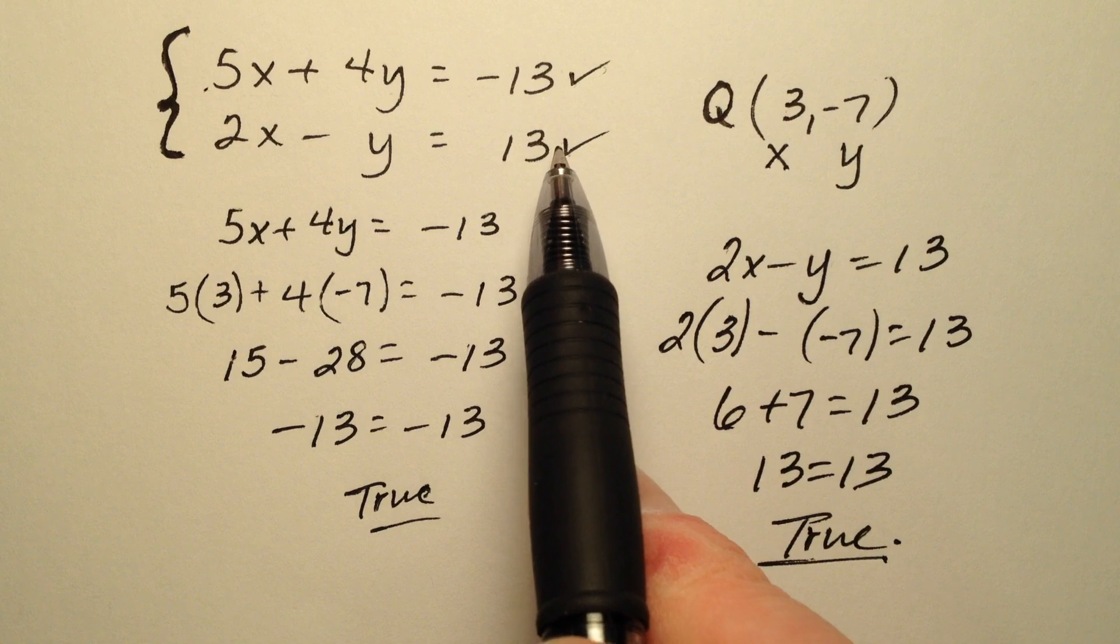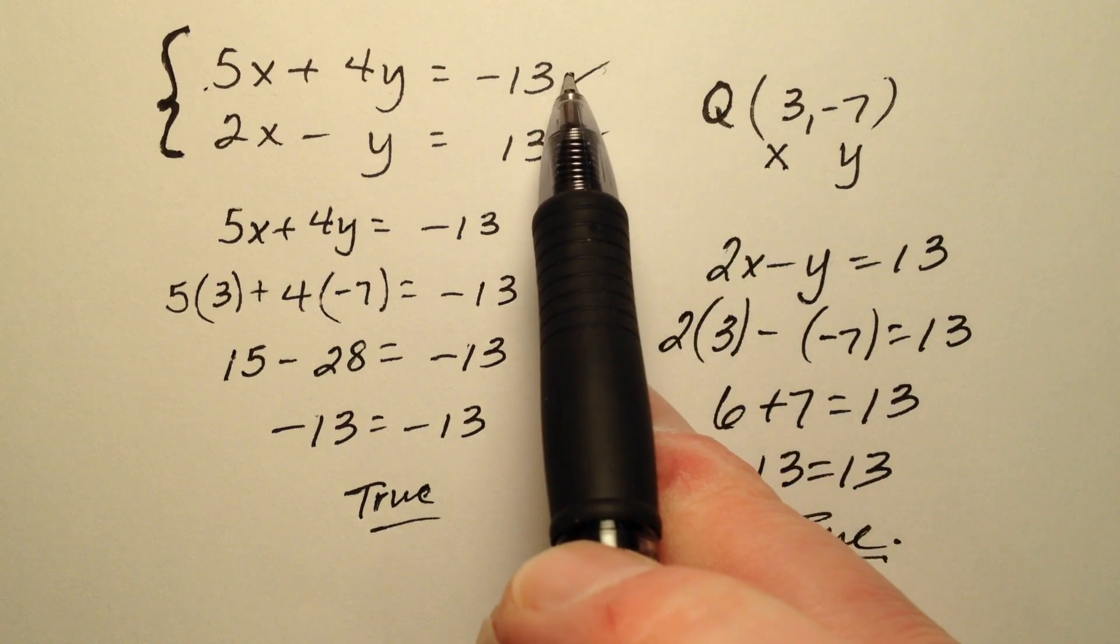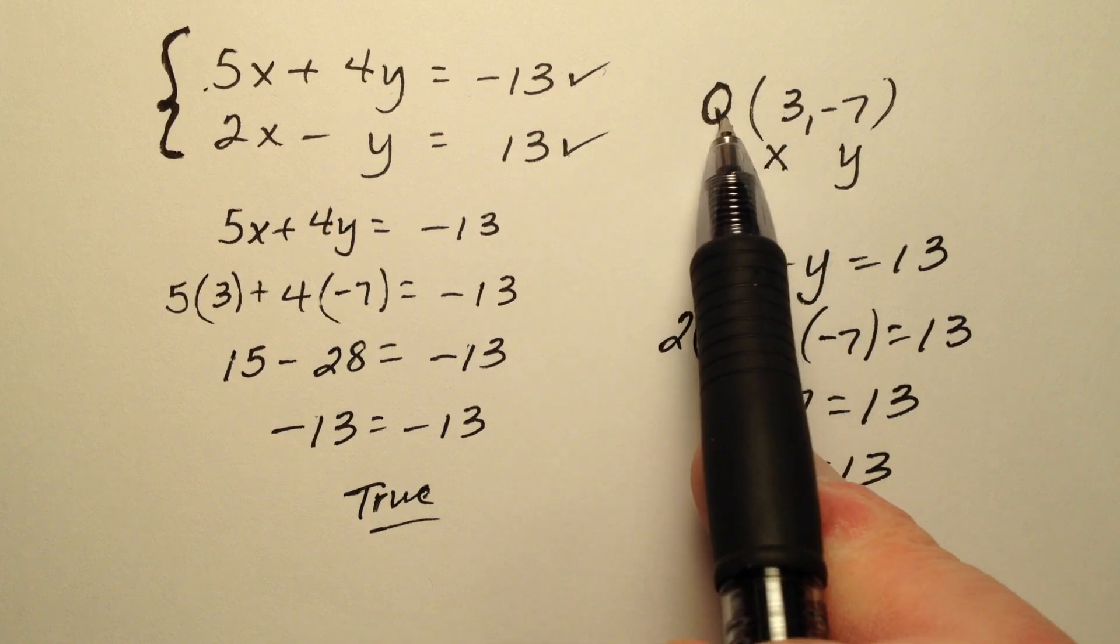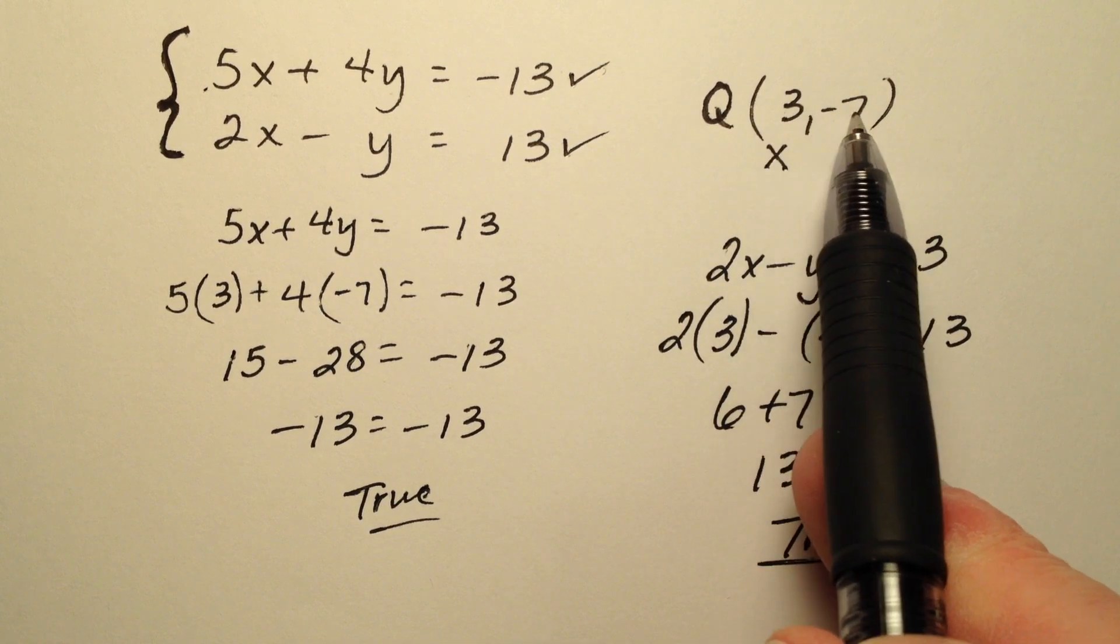I have now determined that Q is a solution for every single equation in the system. So I can say point Q, this ordered pair 3, negative 7, is a solution for the entire system.